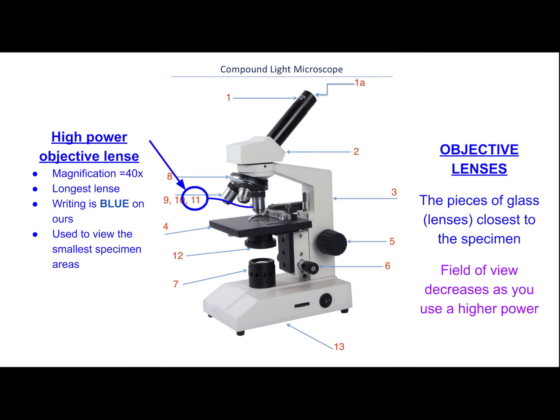Number 12, underneath the stage, is the diaphragm. The diaphragm adjusts the amount of light that passes through the specimen. It's sometimes used along with a condenser — our scopes do have a condenser. The condenser narrows or widens the beam of light passing through. If you have a dark or thick specimen, widen the beam so more light gets through. If you have a very thin specimen, narrow the light so the brightness doesn't drown out the image. Adjusting this can help you see the image more clearly.